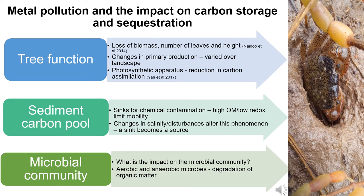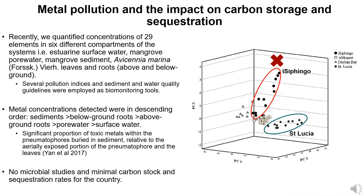We have identified 29 elements in different components of the estuarine system and found that the sediment represents a significant sink, followed by below ground roots, above ground roots, pore water and surface water. Using the sediment data we were able to characterize these systems and link them to the disturbance index. This will allow us in the future to relate changes in microbial communities and potential changes in carbon storage.